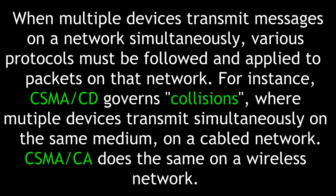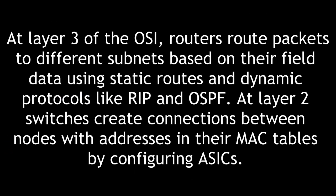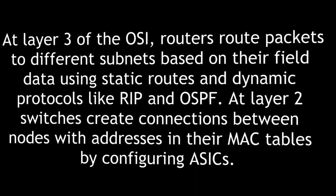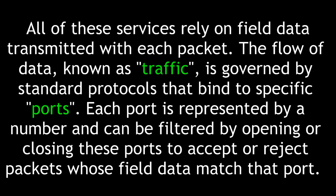When multiple devices transmit messages on a network simultaneously, various protocols must be followed and applied to packets. For instance, CSMA/CD — Carrier Sense Multiple Access with Collision Detection — governs collisions when multiple devices transmit simultaneously on a cabled network. CSMA/CA, or Collision Avoidance, does the same on a wireless network. At Layer 3 of the OSI model, routers route packets to different subnets based on their field data, using static routes or dynamic routing protocols such as RIP and OSPF. At Layer 2, switches create connections between nodes using MAC tables by configuring their ASICs, enabling full-duplex connections between multiple MAC addresses.